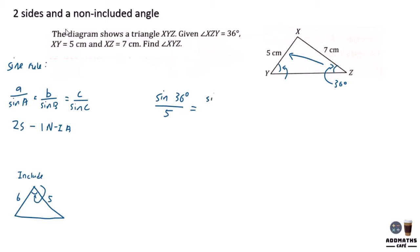Equal sine, which is unknown. Let's say this is x, sine x is to the opposite, which is 7.